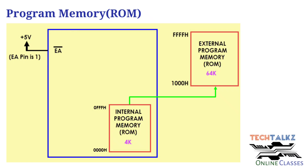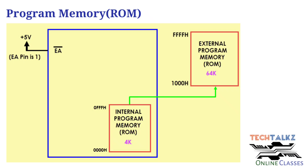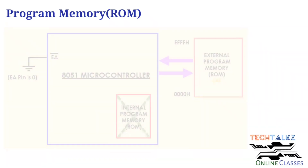With the 8051 microcontroller, external 64KB ROM can be connected. With the EA pin high, the CPU first accesses internal program memory. When address 0FFF hex is exceeded, we go to the external program memory, which starts from 1000 hex up to FFFF hex. So first internal memory, then external memory is accessed.